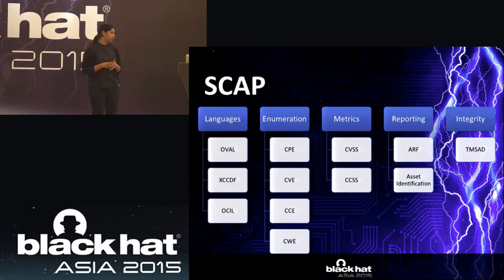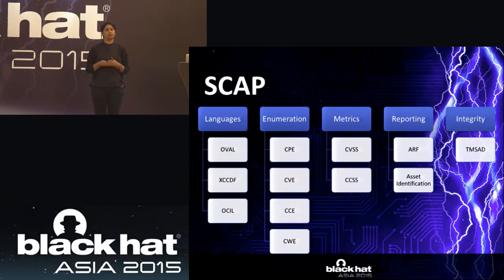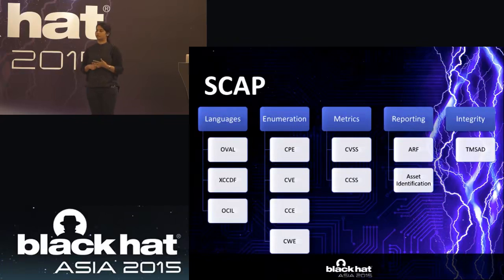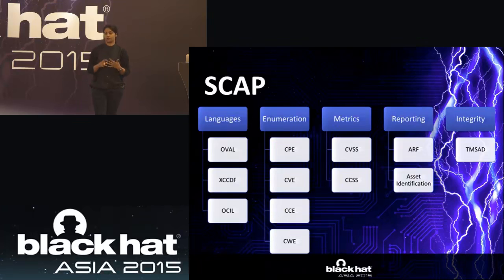I'll quickly go through the enumerations. There is CPE, Common Platform Enumeration, where all products, applications, hardware, and operating systems are given a nomenclature. CVE enumerates all vulnerabilities with an ID and detailed information. CCE is the Common Configuration Enumeration. CWE covers common weaknesses — every CVE falls under some existing weakness category.